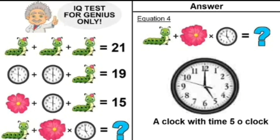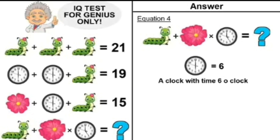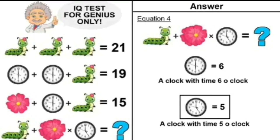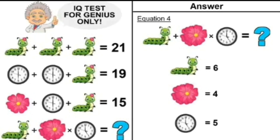Moving on to figure number 3, it's a clock with time 5 o'clock — not the same as in equations 2 and 3 which had time 6. A clock with time 6 was equal to 6, so a clock with time 5 o'clock is equal to 5. We now have all the values: caterpillar with 6 sphericals equals 6, 2 flowers equals 4, and clock with time 5 equals 5.